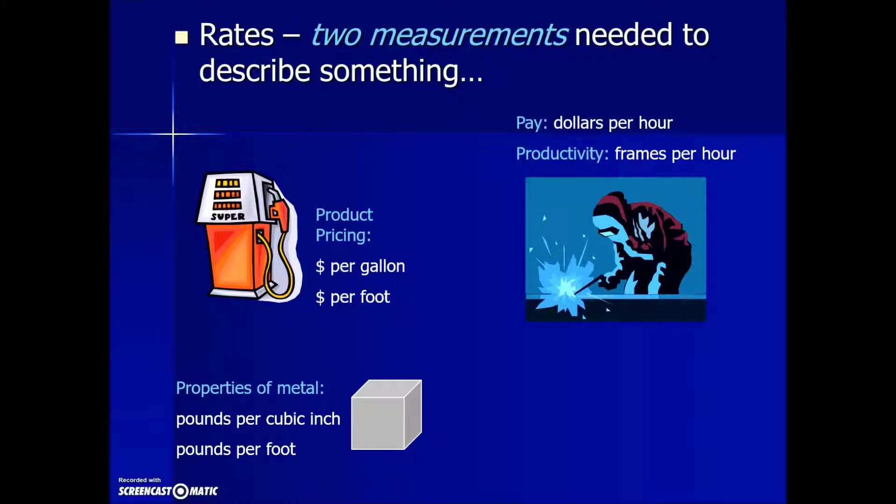Properties of metal, if we're talking about density of something, sometimes it's expressed as pounds per cubic inch or per foot. Here's examples specifically, steel has a density of 0.283 pounds per cubic inch, and I-beam has a standard of 35 pounds per foot. These are all describing rates.